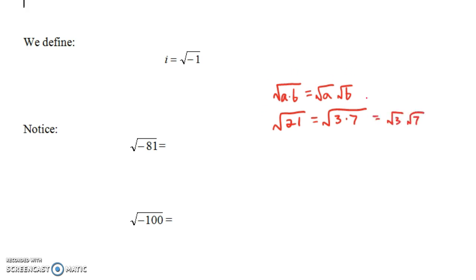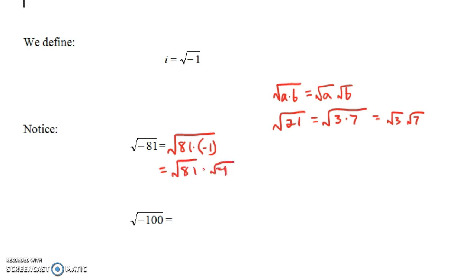This property of square roots works as long as at least one of a or b is positive. So, how would we do the square root of negative 81? We can think of negative 81 as 81 times negative 1. According to this rule, we write this as the square root of 81 times the square root of negative 1. The square root of 81 is 9, and the square root of negative 1 is i. So the square root of negative 81 is 9i. If you were to do 9i times 9i, you would get 81i squared, but i squared is negative 1.